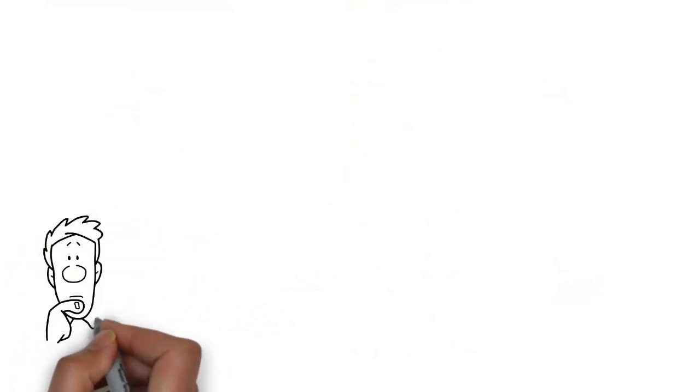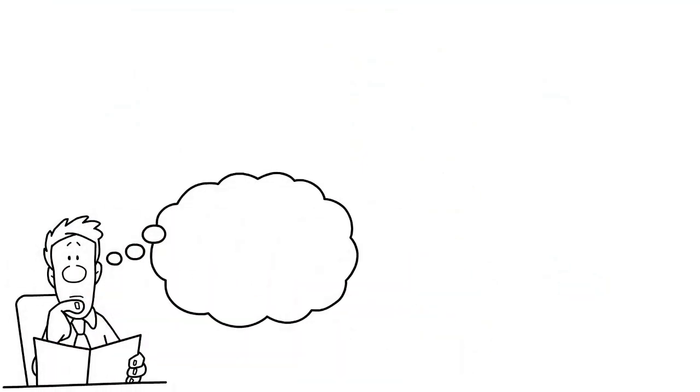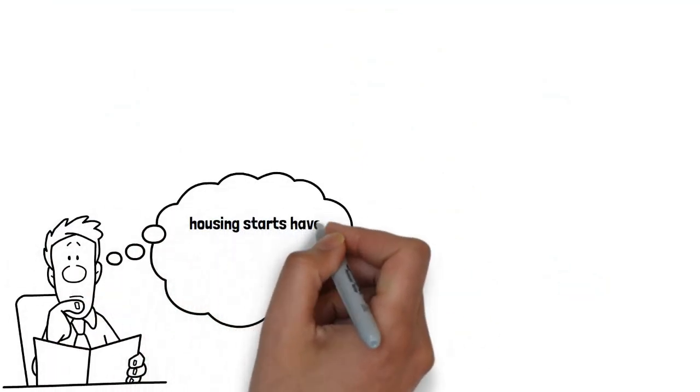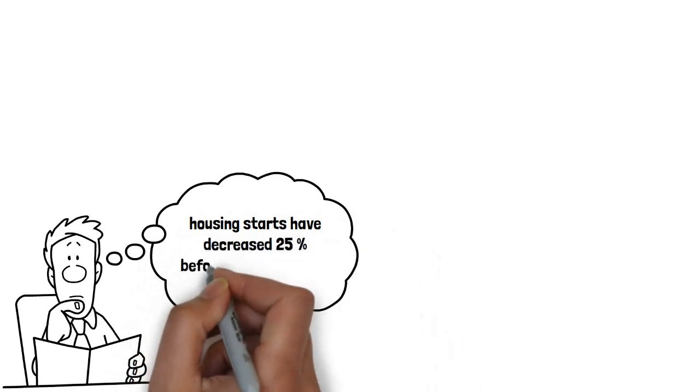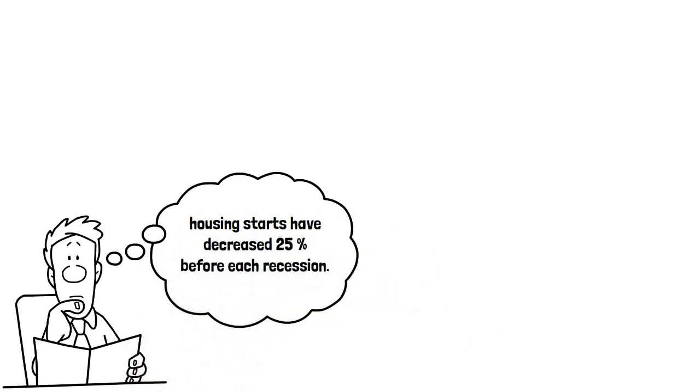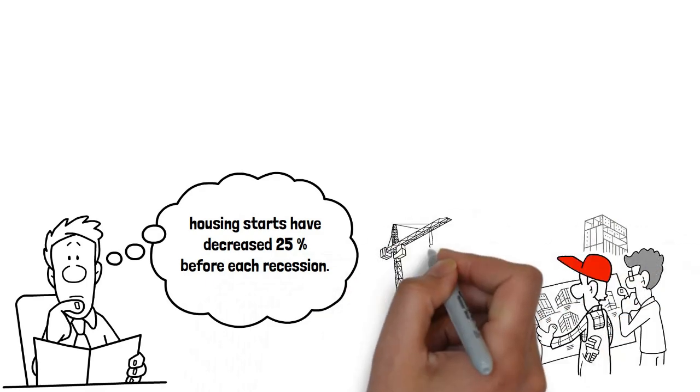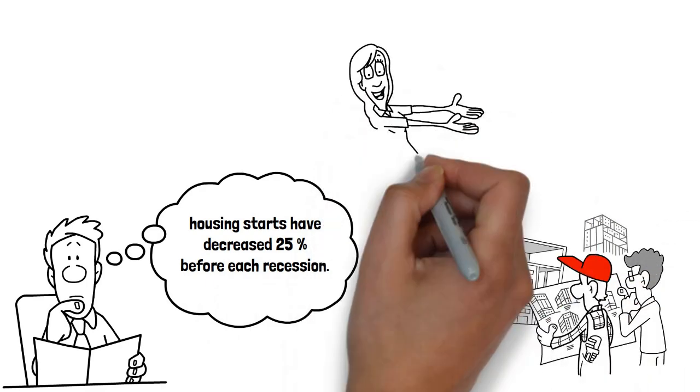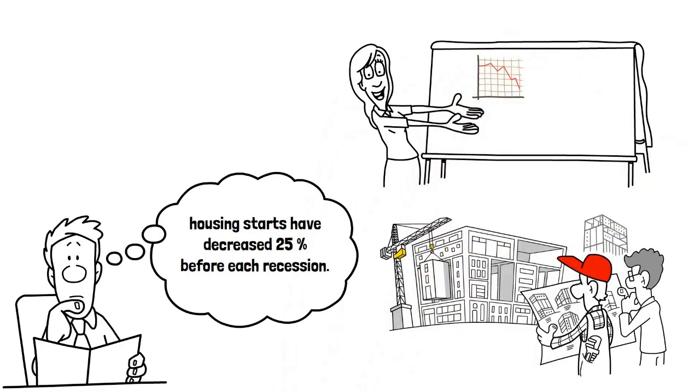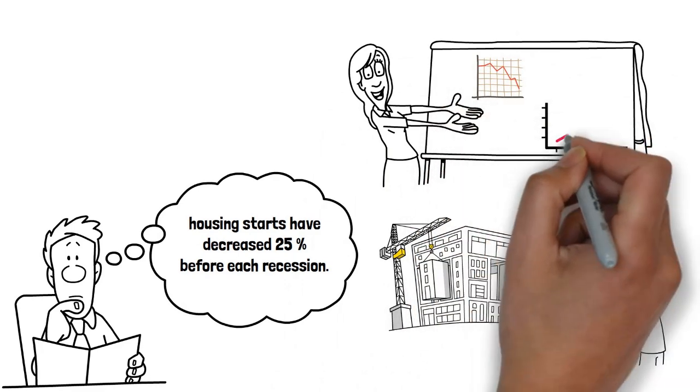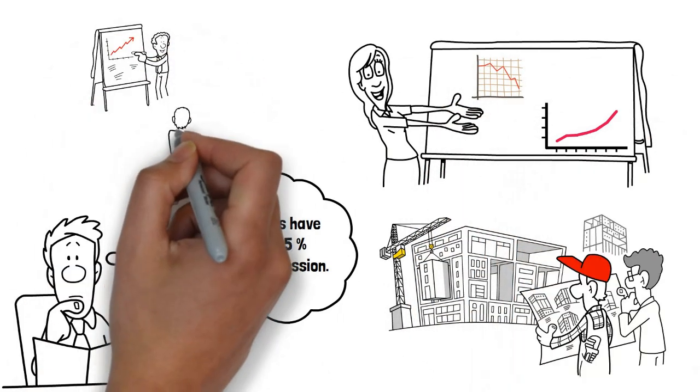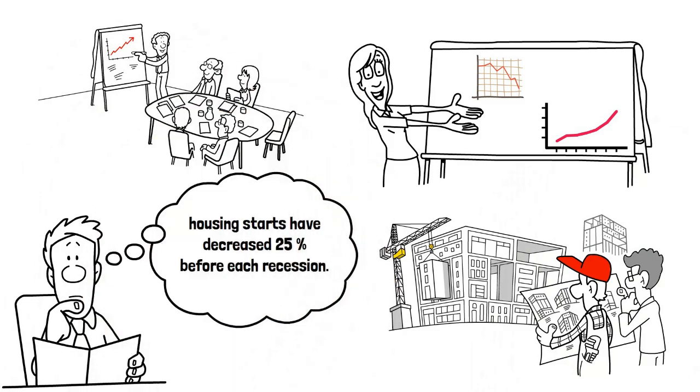Looking back at the housing data since 1960, housing starts have decreased 25% on average before each recession. As of a couple of months ago, housing starts were down and new mortgage applications decreased significantly as mortgage rates got higher, which we can assume had to do with the Fed raising its benchmark interest rate.